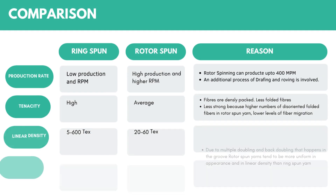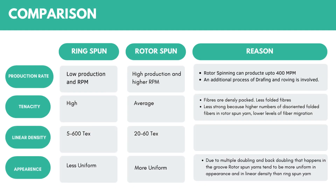Now let's look at the differences in structural and physical properties. Starting with production rate: ring spun yarn has a low production rate and low RPM, while rotor spun has a high production rate and high RPM. Rotor spinning can provide up to 400 meters per minute, whereas ring spinning cannot. Additionally, ring spinning involves an extra process of drafting and roving which increases cost, whereas in rotor spinning you can directly take slivers and individualize them to spin back into the rotor. This saves the cost of an extra setup, making rotor spun yarn a bit cheaper.